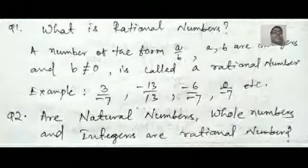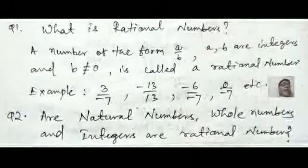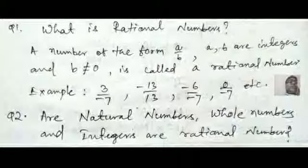What is rational number? The first question is a simple question that everyone asks you. A number is of the form A by B, where A and B are integral and B is not equal to 0. Then you can call this a rational number. You can easily exemplify also. Any example you can take. Here are some examples given.